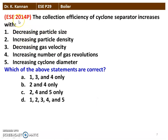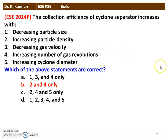Next question again from the 2014 question paper: the collection efficiency of a cyclone separator increases with — decreasing particle size; increasing particle density; decreasing gas velocity; increasing number of gas revolutions; increasing cyclone diameter. The correct option is B: statements 2 and 4 are correct — increasing particle density and increasing number of gas revolutions will increase the collection efficiency of the cyclone separator.